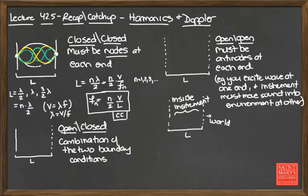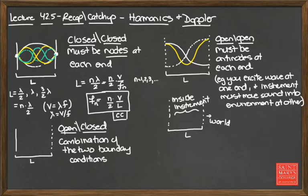Then we looked at the example of an open-open system — a trumpet would be an example. There I argued that with open-open systems, each endpoint must be an anti-node. So the fundamental harmonic oscillates with anti-nodes at both ends. The second harmonic has an additional node in the middle, and higher harmonics can also exist as standing waves in an open-open system.